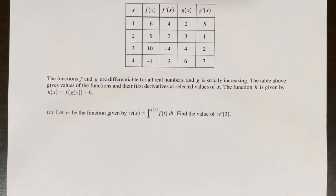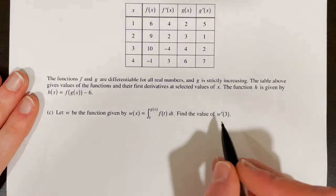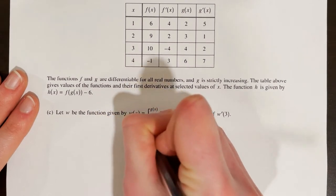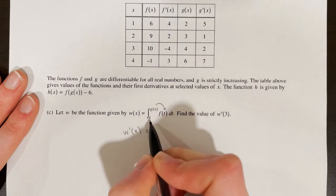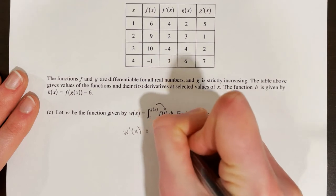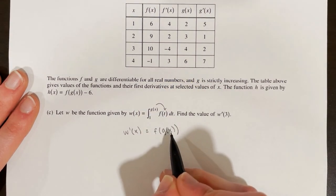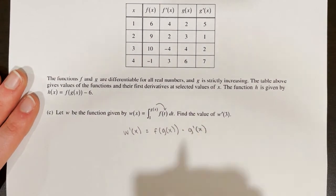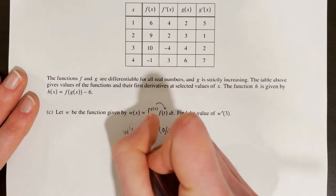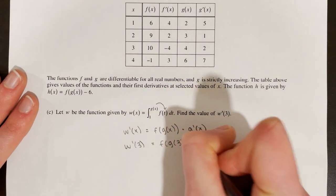The functions f and g are differentiable for all real numbers, and g is strictly increasing. The table gives values of the functions and their first derivatives at selected values of x. The function h is given by h of x equals f of g of x minus 6. Let w of x equal the integral from 1 to g of x of f of t dt. To find w prime of x, by the fundamental theorem we plug g of x in for t, giving f of g of x, then apply the chain rule by multiplying by g prime of x.